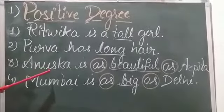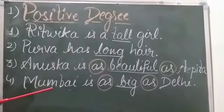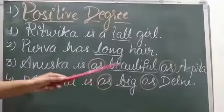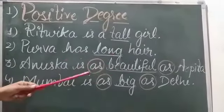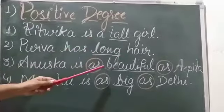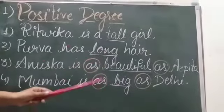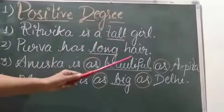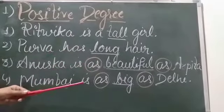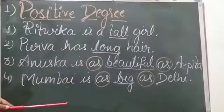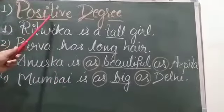Next example: Anushka is as beautiful as Arpita. Mumbai is as big as Delhi. In these two sentences, we have used the word 'as'. It means Anushka and Arpita are both equally beautiful, and Mumbai and Delhi are both equally big. Though Anushka is compared with Arpita and Mumbai is compared with Delhi, the comparison is equal — both are of the same level. So the adjectives which are compared equally all fall under positive degree.